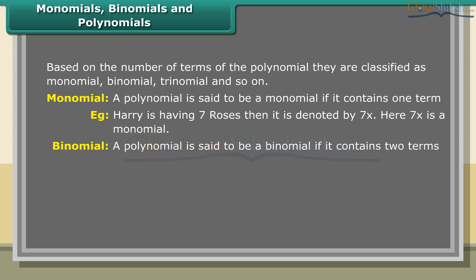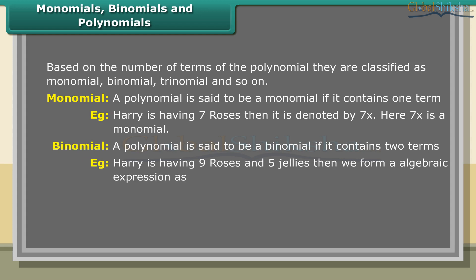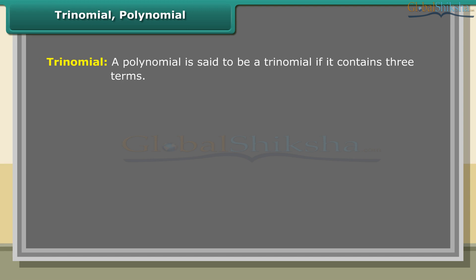A polynomial is said to be a binomial if it contains two terms. Example: Harry is having nine roses and five jellies. Then we form an algebraic expression as 9x plus 5y, where x denotes the number of roses and y denotes the number of jellies. 9x plus 5y is a polynomial which contains two terms.